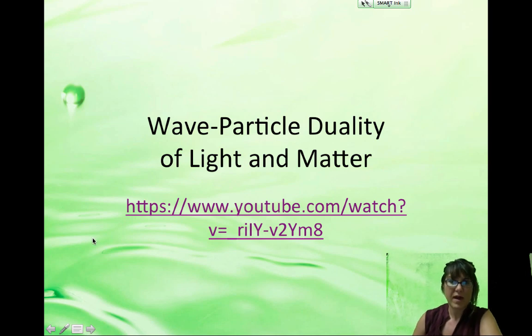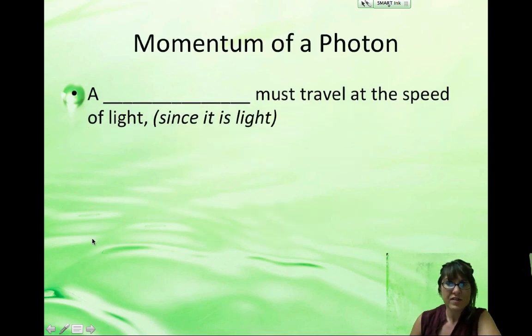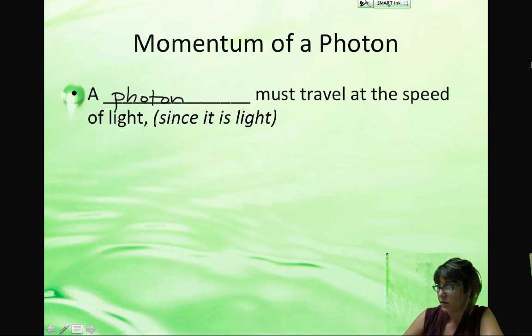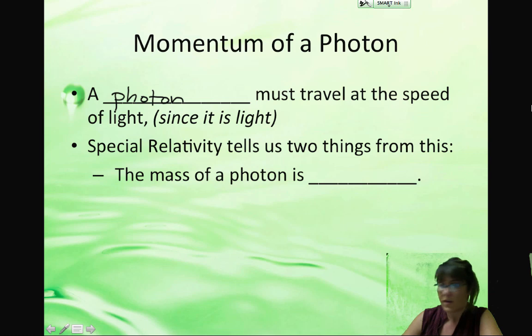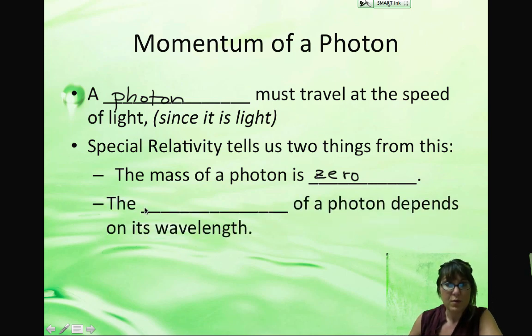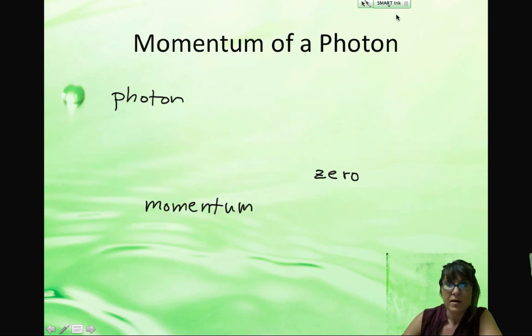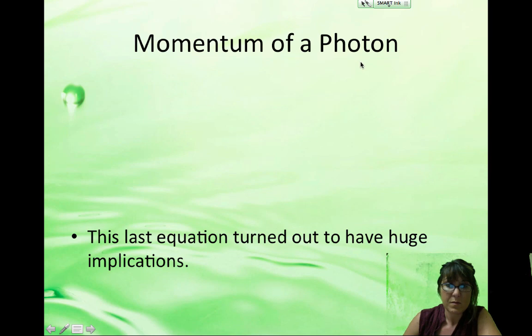So now we're going to talk about how can matter actually act like a wave. Well, first of all, let's consider the momentum of a photon. A photon must travel at the speed of light because it's a particle of light. So it's going to go 3 times 10 to the 8 meters per second. When it's going that fast, special relativity tells us two things. First of all, the mass of the photon when it's going that fast is exactly zero. So it has no measurable mass. And the momentum of the photon depends on only its wavelength because its mass is zero.